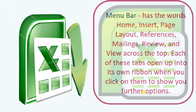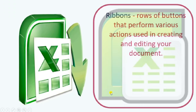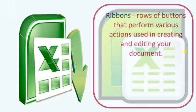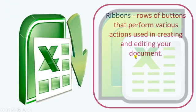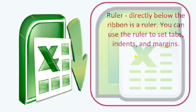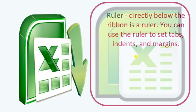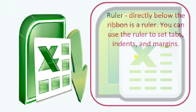Next is the Ribbon — rows of buttons that perform various actions used in creating and editing your document. The whole ribbon at the top has functions for editing and creating documents. The Ruler is like a scale present on the margins. You can use the ruler to set tabs, indents, and margins — how much indentation, spacing, and margin you want can all be set with the ruler.